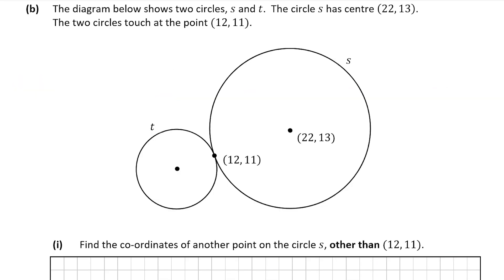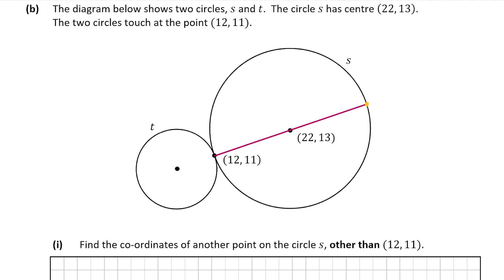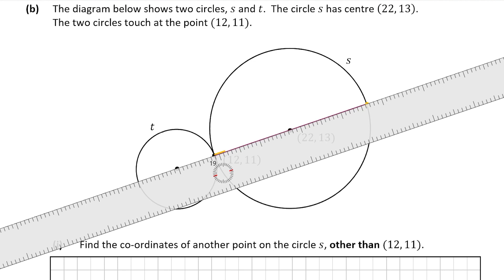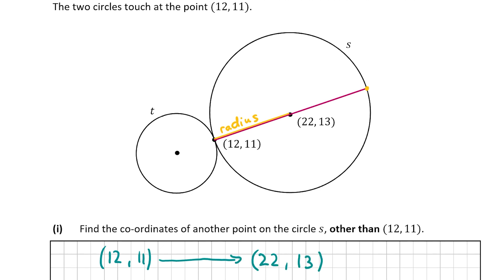Now let's look at part b. The diagram shows two circles s and t. Circle s has centre (22, 13) and they touch at the point (12, 11). We need to find another coordinate on s apart from (12, 11). I'm going to draw a line from (12, 11) through (22, 13) to the other side of the circle — this forms the diameter. From (12, 11) to (22, 13), the x value increases by 10 and the y value increases by 2.